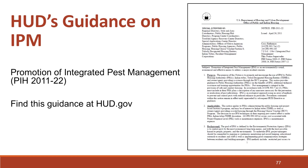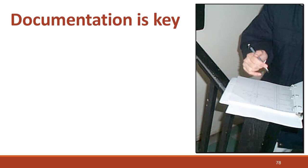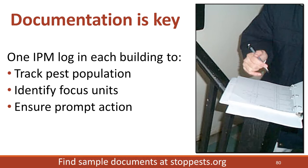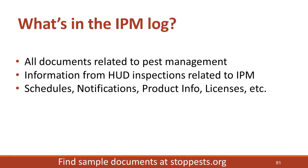As with many processes, documentation is key. Record-keeping brings accountability to pest management and ensures that problems are fixed before the infestation grows. Accurate record-keeping can also protect your agency in the event of legal complaints. One cohesive log for each building allows building managers and PMP to track pest trends. We can then identify units with the highest level of infestation — we call these focus units — enabling prompt action. An IPM log is one of the most essential pest control tools, serving as a master communications center for collecting and sharing information with everyone on the IPM team.